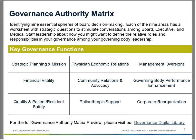We only have about five minutes. I've just moved the slides to a document that people can download — it's about a 20-page document called a governance authority matrix. We've seen in larger systems this tool used to stimulate the conversation about who has which responsibilities and what degree of decision-making authority exists in these nine areas: strategic planning and mission in the upper left-hand corner, physician economic relations, management oversight, financial vitality. All of these have a number of issues that encourage discussion about the degree of control and the relative responsibilities.